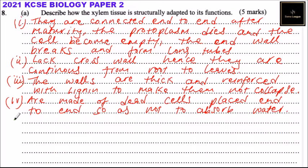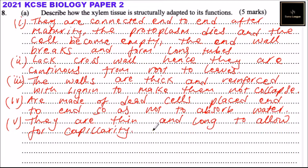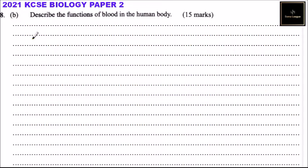The xylem vessels are also thin and narrow to allow for capillarity, which helps draw water upward through the plant. Those are the main structural adaptations of xylem tissue to its function.